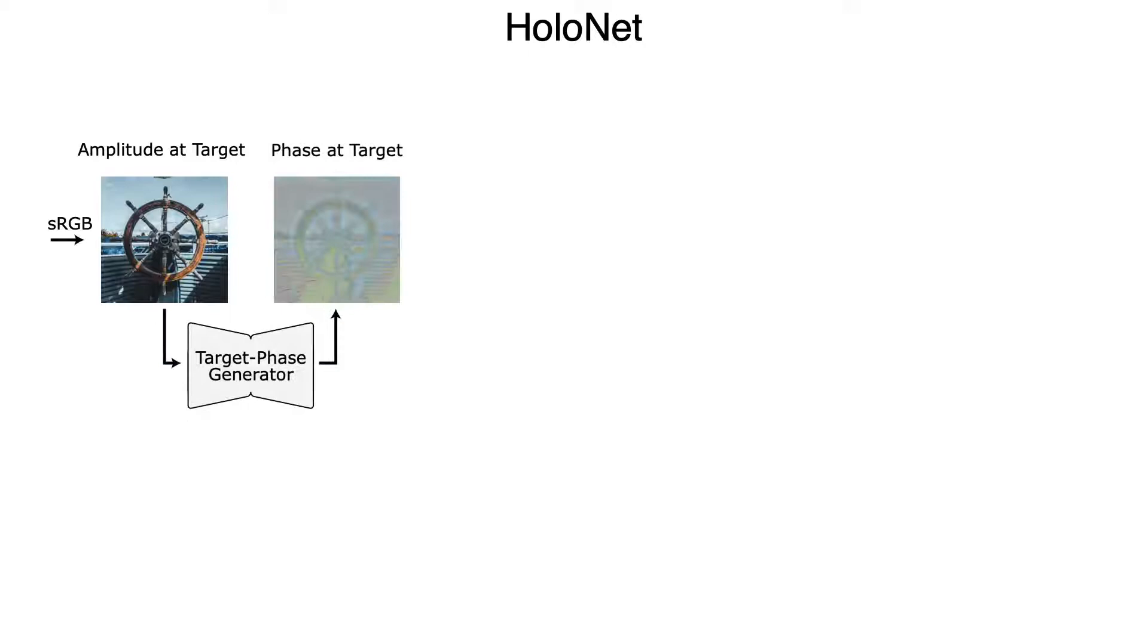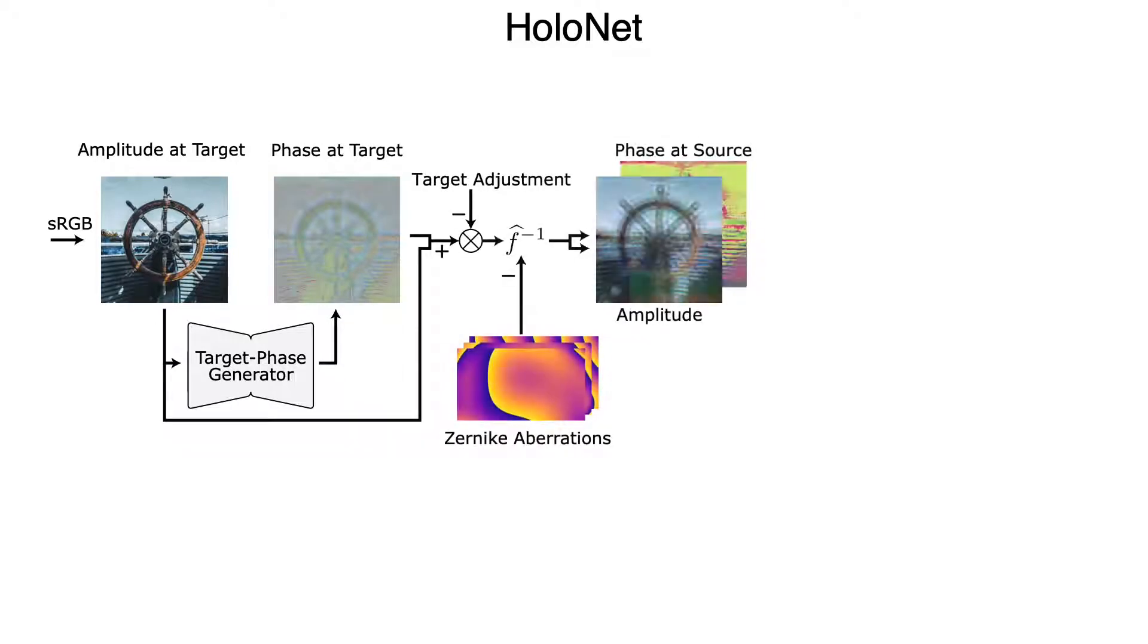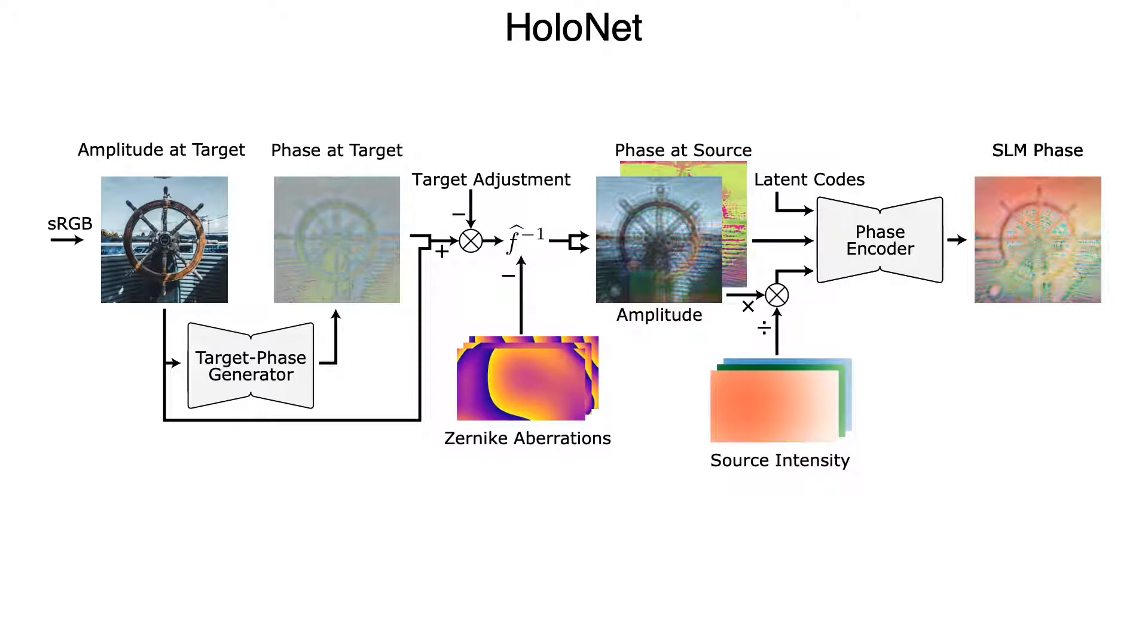We also propose an efficient neural network architecture that can synthesize high-quality holograms in real time. For this purpose, we pass the target amplitude into a target phase-generator network, then apply a multi-part propagation based on the calibrated model to the resulting complex-valued field. Finally, we predict a phase-only pattern with a phase-encoder network.